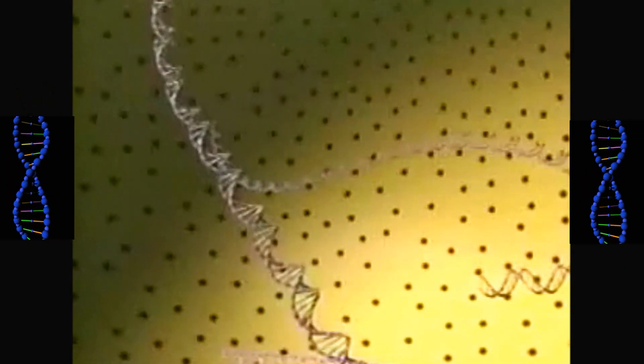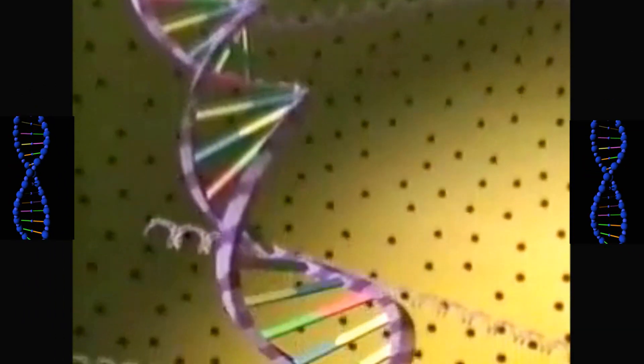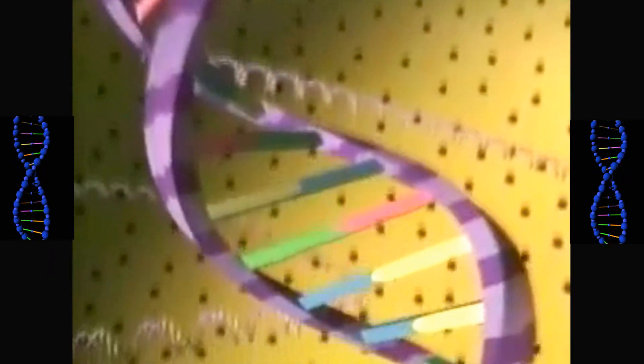DNA contains two strands of building blocks called nucleotides arranged like a spiral staircase. Each nucleotide includes three parts.